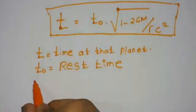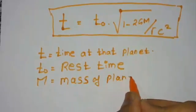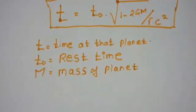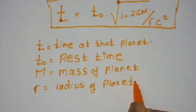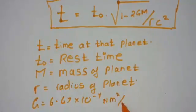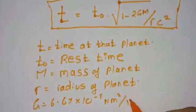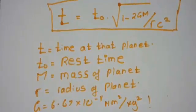G is the gravitational constant, 6.67 times 10 to the power minus 11 newton meters squared per kilogram squared. M is the mass of the planet, r is the radius of the planet, and c is the speed of light. So these are our variables in the formula: t equals t-naught times the square root of 1 minus 2GM divided by rc squared.